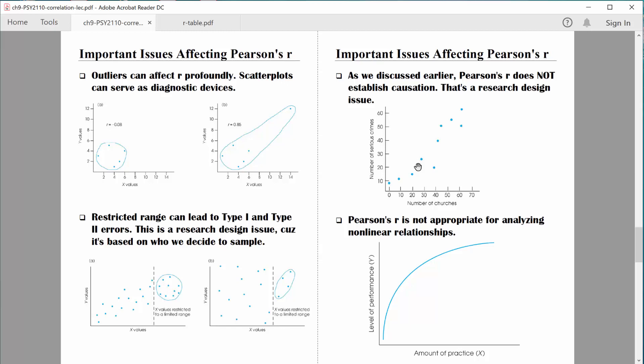Remember, correlation doesn't prove causation. Give some thought as to why you think we might find that relationship. We would indeed in the real world find a relationship like that. It's probably because there's some third variable, some other variable that's driving that relationship right there. So some variable that we did not control.